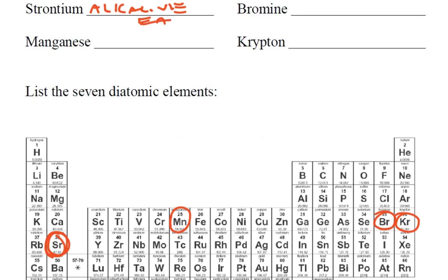And be careful on this one, because the first column over here, those are the alkali metals, alkali, but these are called the alkaline earths, so it's pretty close.